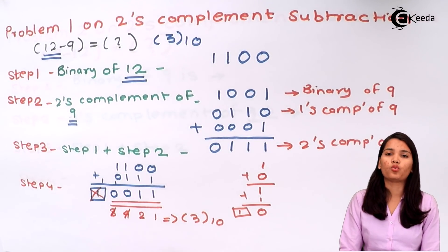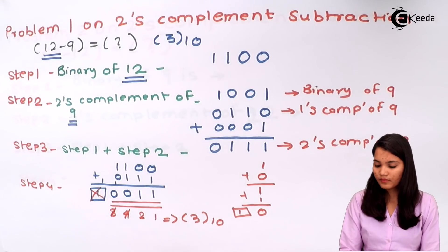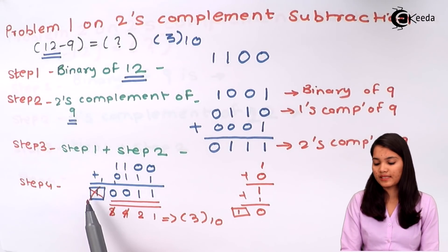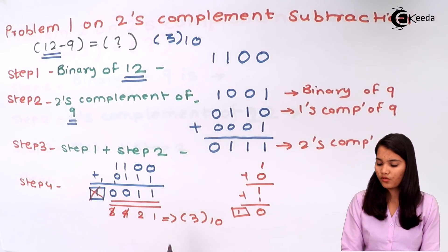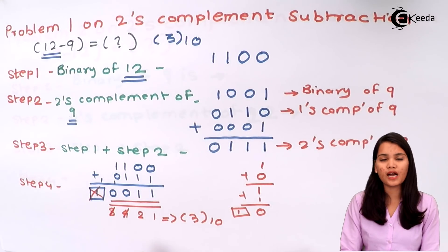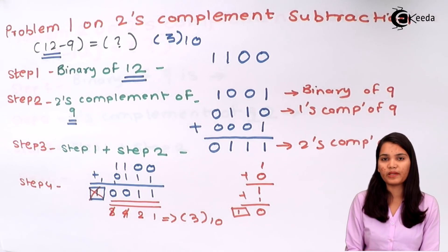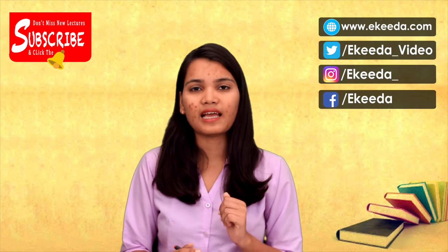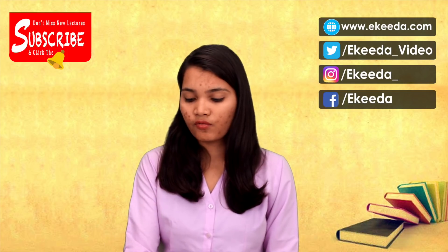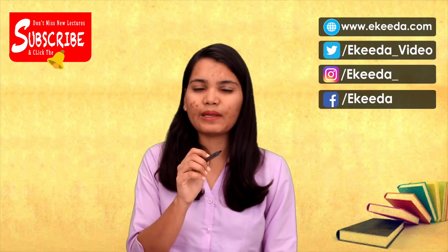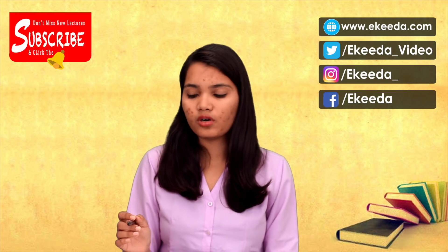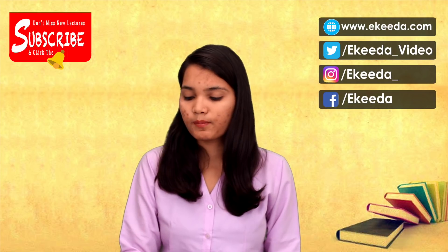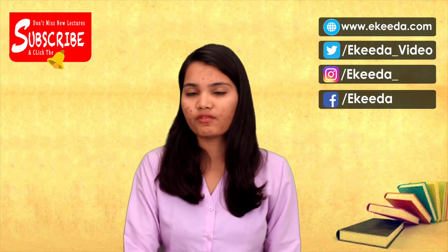To know whether the answer is positive or negative: if carry 1 is present, the answer is always positive. Therefore the answer is positive 3. This is how we perform subtraction using the two's complement method. The most important step is step 4 — delete the carry if present. Perform each binary addition and binary conversion carefully to get the correct final answer.